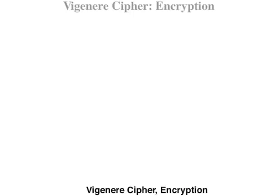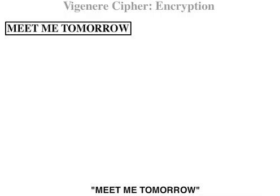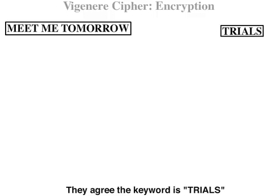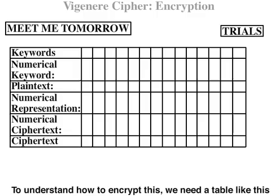Vigenère cipher encryption. In this example, Alice wants to send Bob a message: 'Meet me tomorrow.' They agree the keyword is 'trials.' To understand how to encrypt this, we need a table like this.